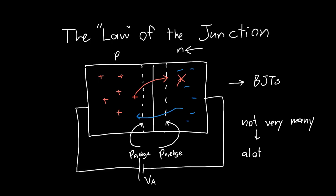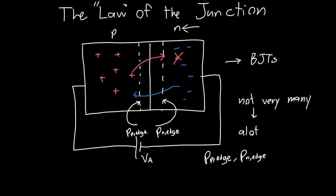So we'd like some law or some equation that gives us a relationship between the holes at the edge of the semiconductor on the P-side and the N-side. And we'd like it to be in terms of quantities that we can remember and easily use, like the built-in potential and the voltage that we're applying to the junction.